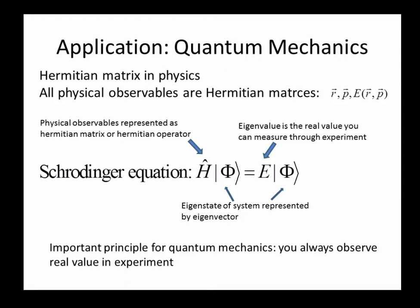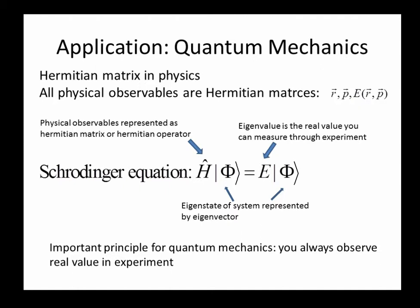Actually, Hamiltonian is the energy of the system and it is a Hermitian matrix. So its eigenvalue E is always real. The eigenvalue is the observable that you can measure through the experiment. It is consistent with our experimental results since we never measure a complex value. This is an important principle in quantum mechanics.